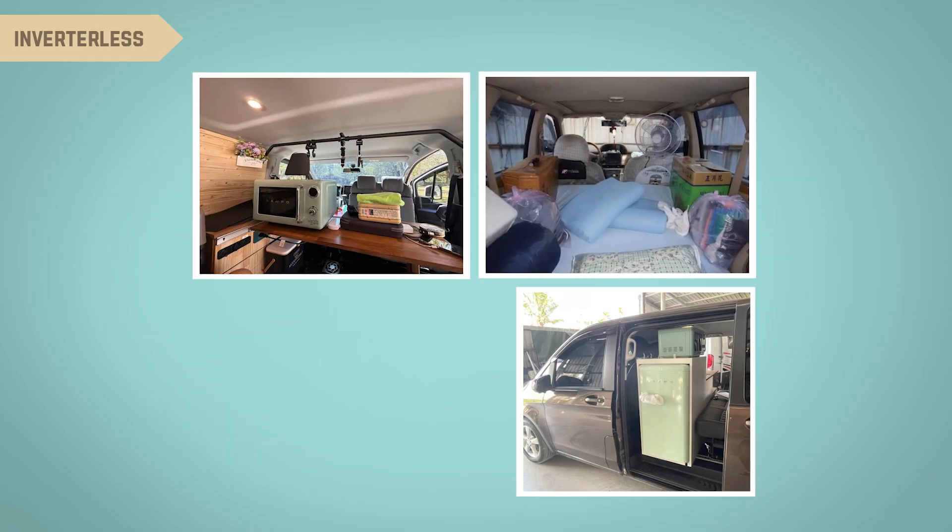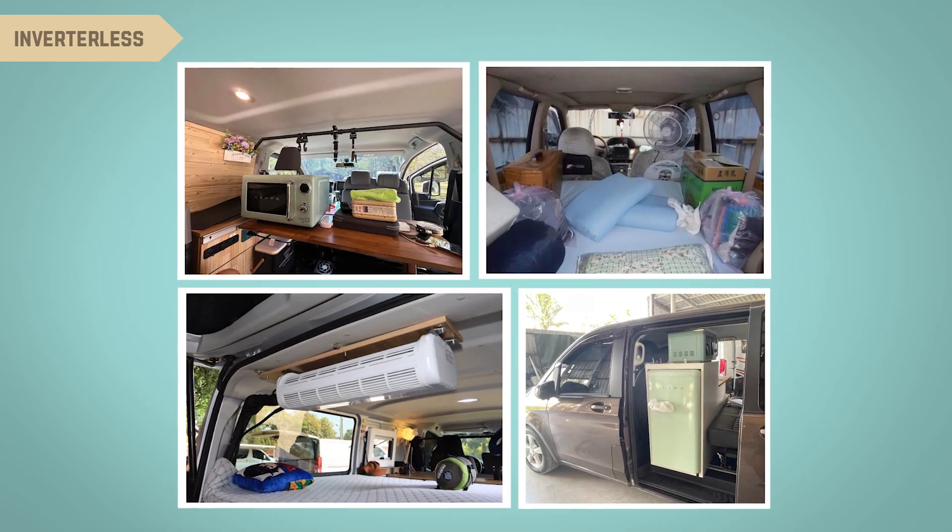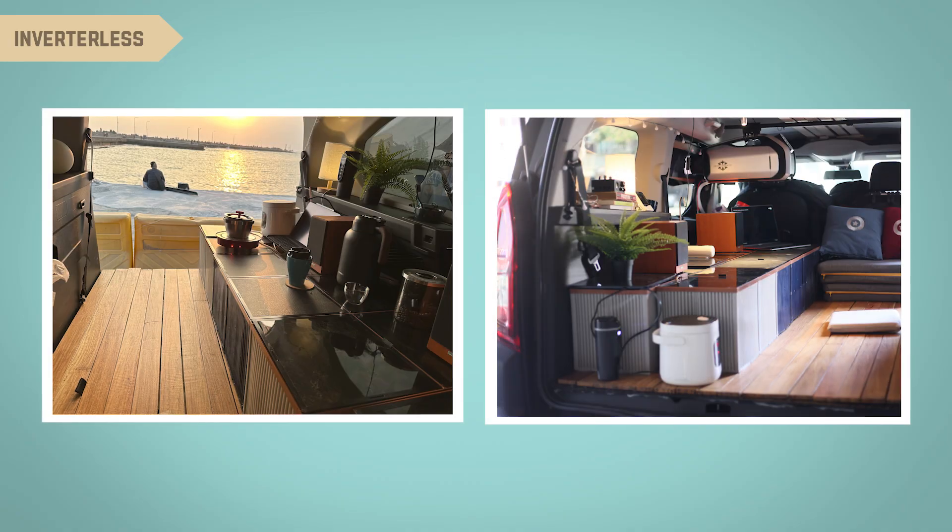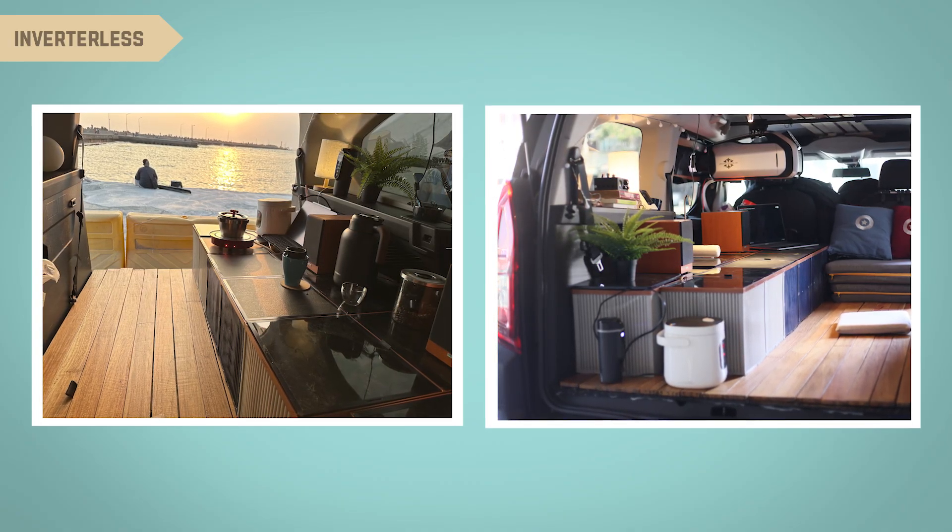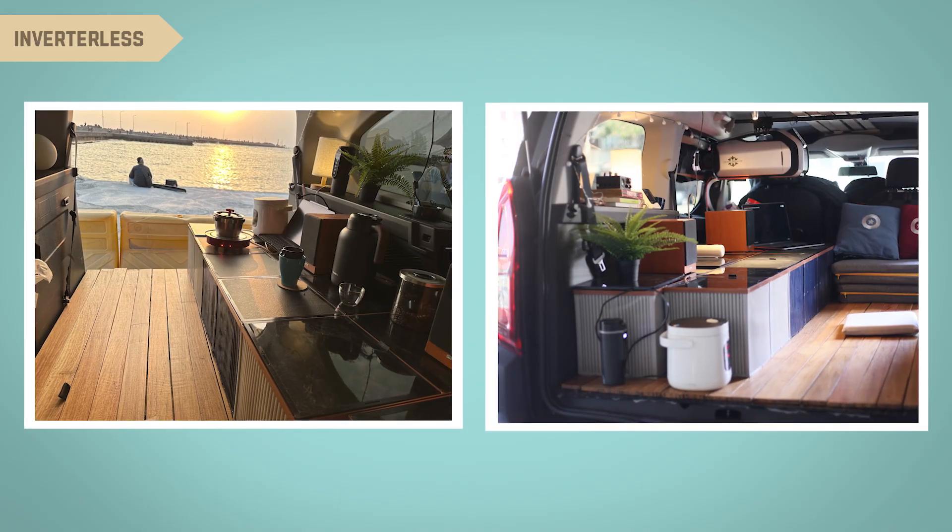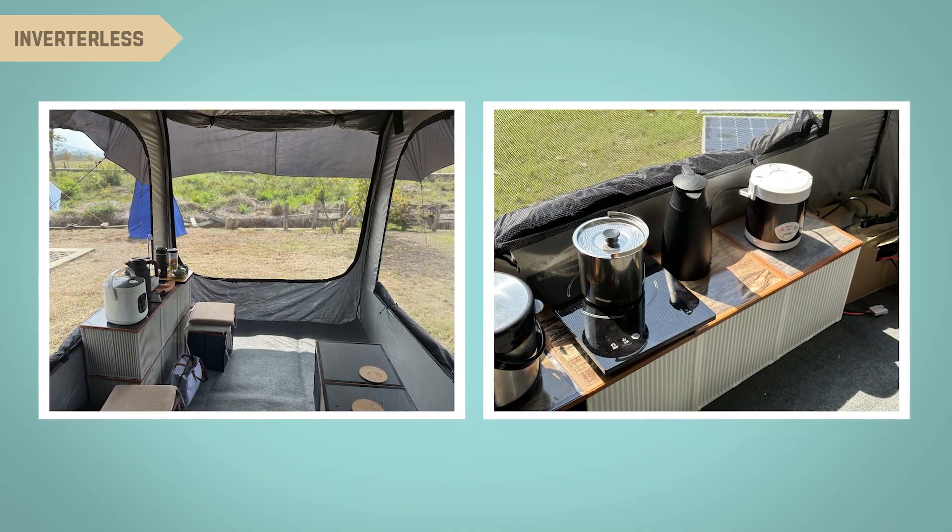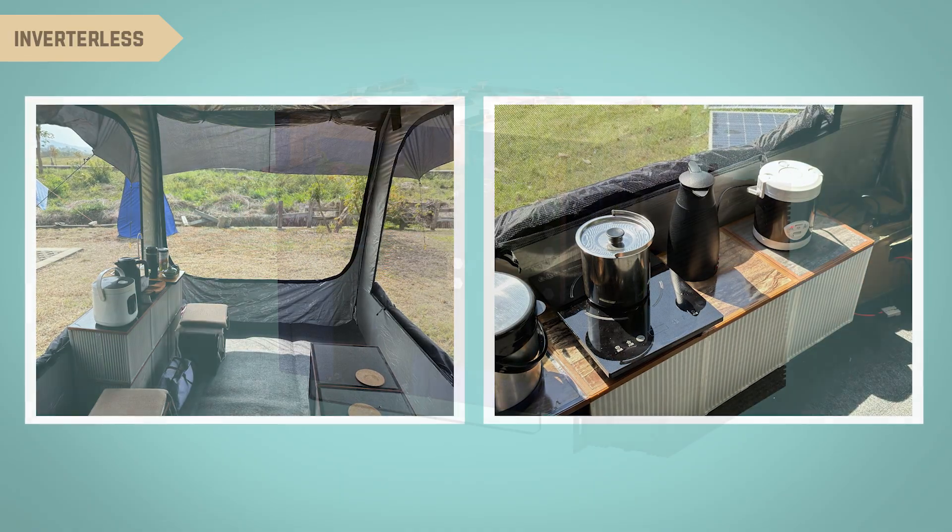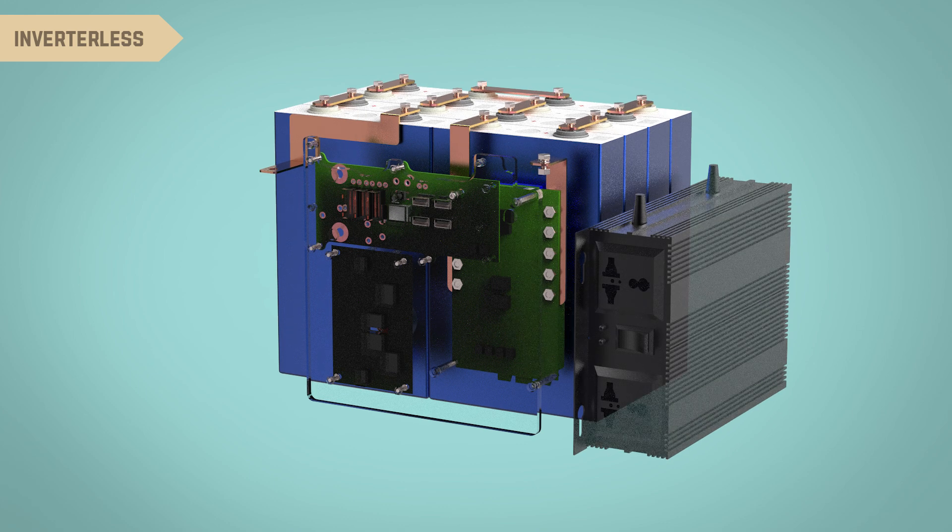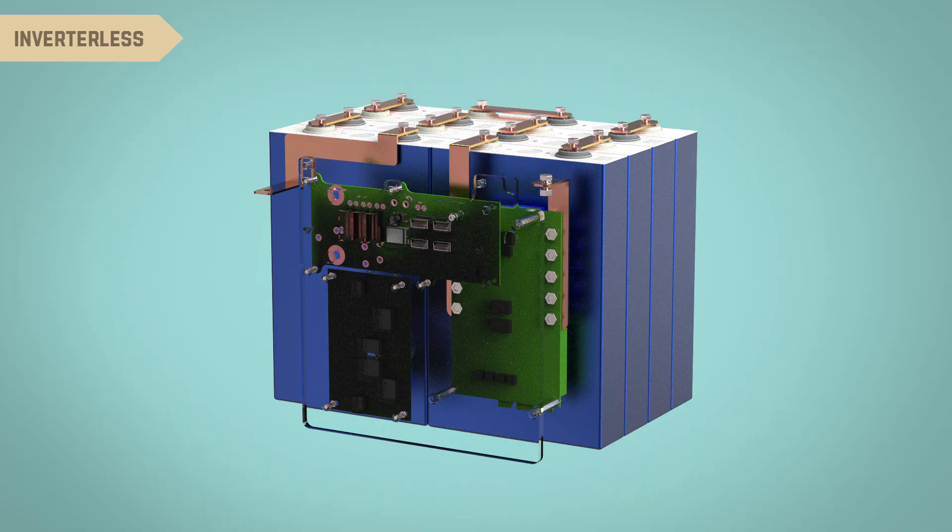While most people bring household appliances into their vehicles, this approach increases the burden of transport and requires extra thought for securing and storing them. By contrast, appliances designed specifically for van life and DC use are more compact and lightweight, integrating better with vehicle interiors and enhancing usability. You can also choose DC appliances with various power levels and functions based on your specific needs without being limited by inverter performance. Overall, eliminating the inverter significantly improves efficiency, stability, and quiet operation.